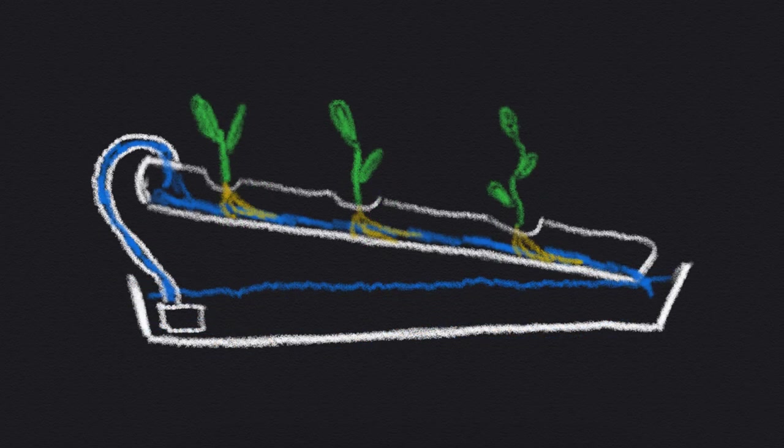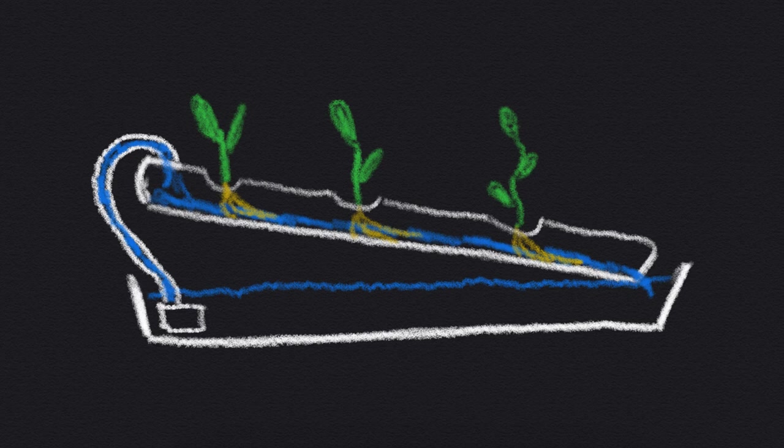Another solution is to place the plant roots in a continuous or intermittent flow of water. A pump transports the nutrient solution upwards and it then flows along the roots of the plants back down into the water reservoir.